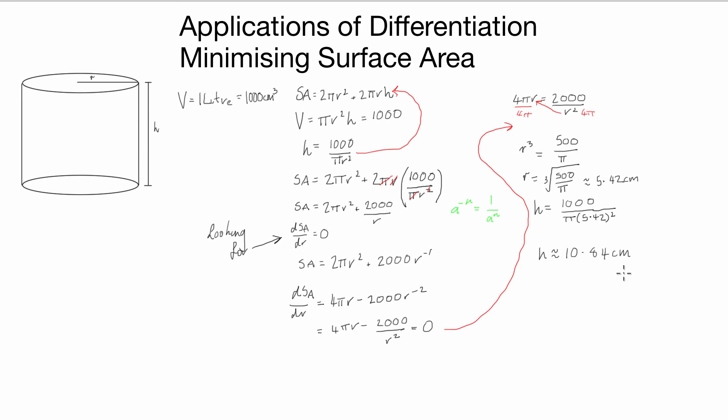It doesn't ask us to find anything else, it doesn't ask us to find what the surface area is. But now that you have these two values, the radius and the height, if you're that way inclined and you want to find out what the actual surface area of material you're going to need is, you can just plug these two values into this equation and you can get yourself the surface area as well. I hope that helped.